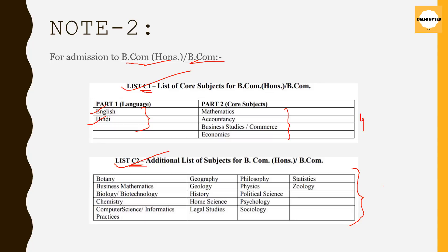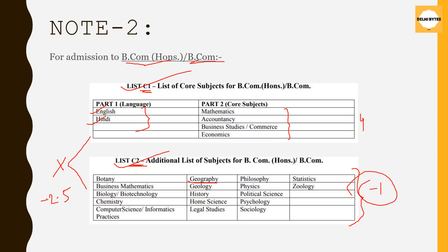The disadvantage with choosing from C2 is that you will get a disadvantage per subject. For example, if you are choosing Geography and you have studied Geography in your qualifying examination, you will get minus 1% for Geography. If you are calculating a subject in your best 4 which is not in C1 nor in C2, then you will bear a disadvantage of minus 2.5% per subject.